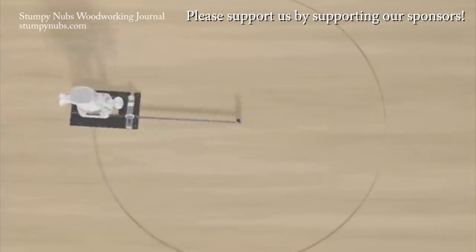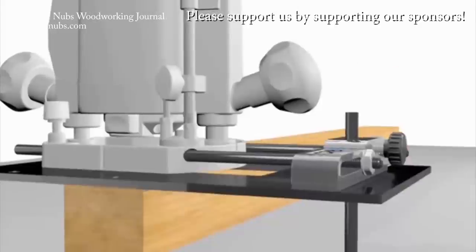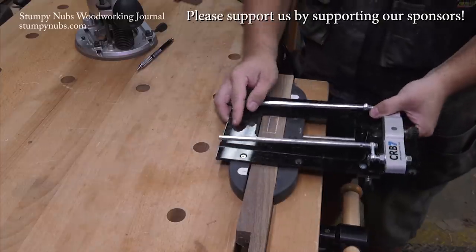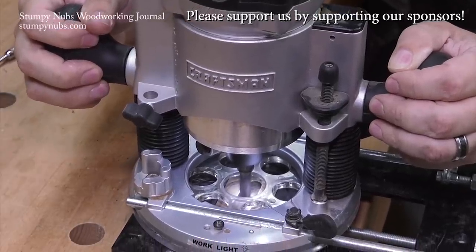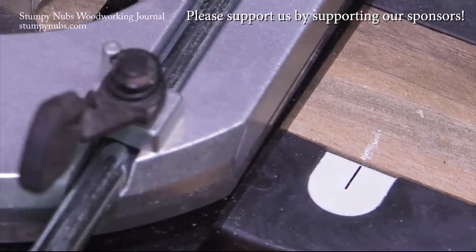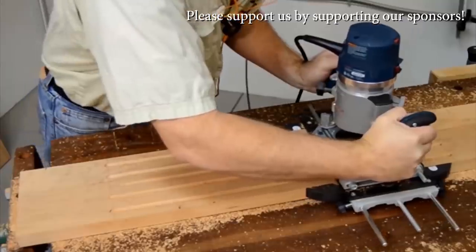This is the CRB7 router jig system from Empower Tools and it does just about everything with amazing accuracy due to its clever micro adjuster. It's just one of the many product innovations from this small family owned company. You got to check them out at the link in the notes below this video.